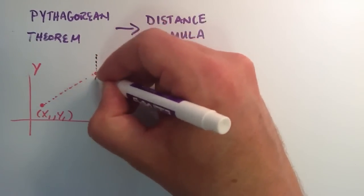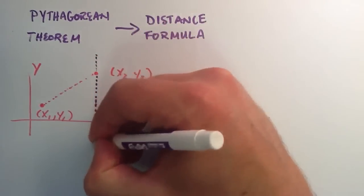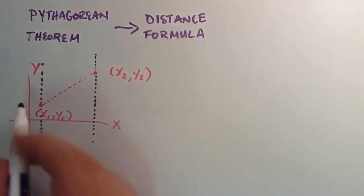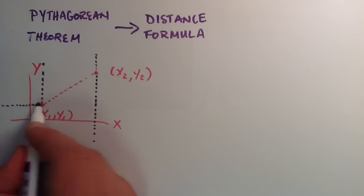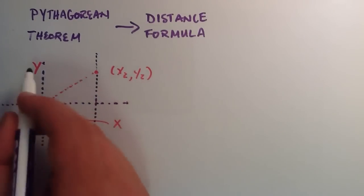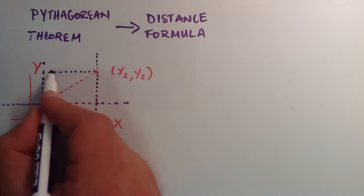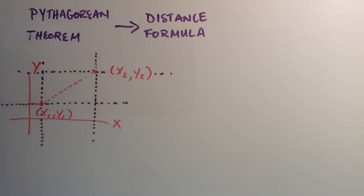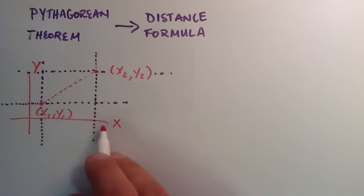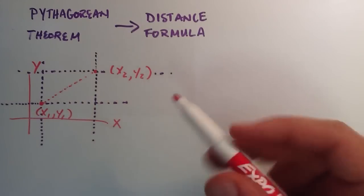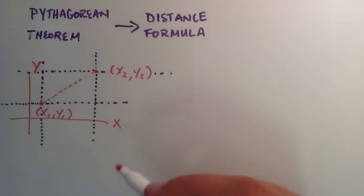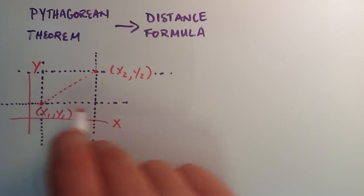I'm going to draw a line parallel to the y-axis through that point, and one parallel to the y-axis through the first point. Then I'll draw a line through the first point parallel to the x-axis, and a line through the second point parallel to the x-axis. We're going to use that to find out how to label our triangle.